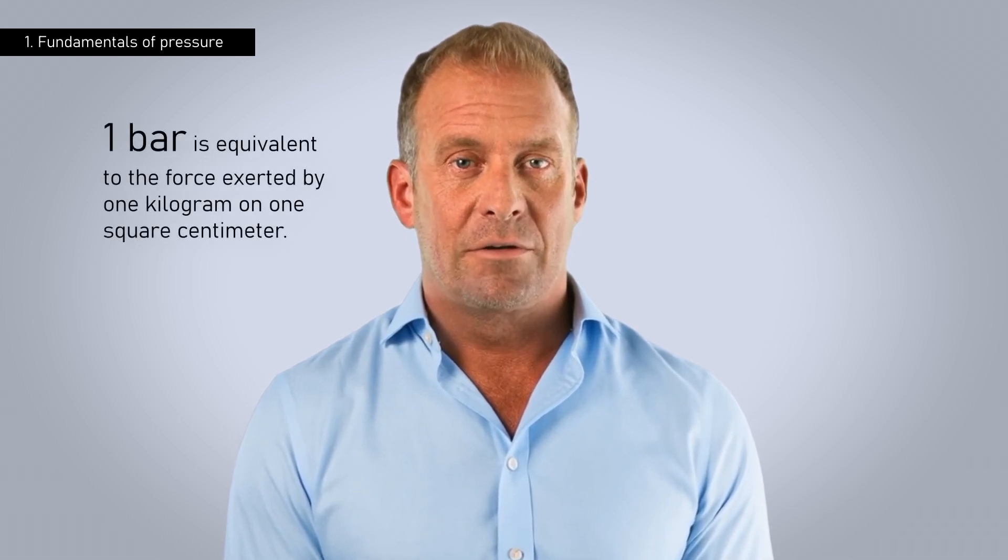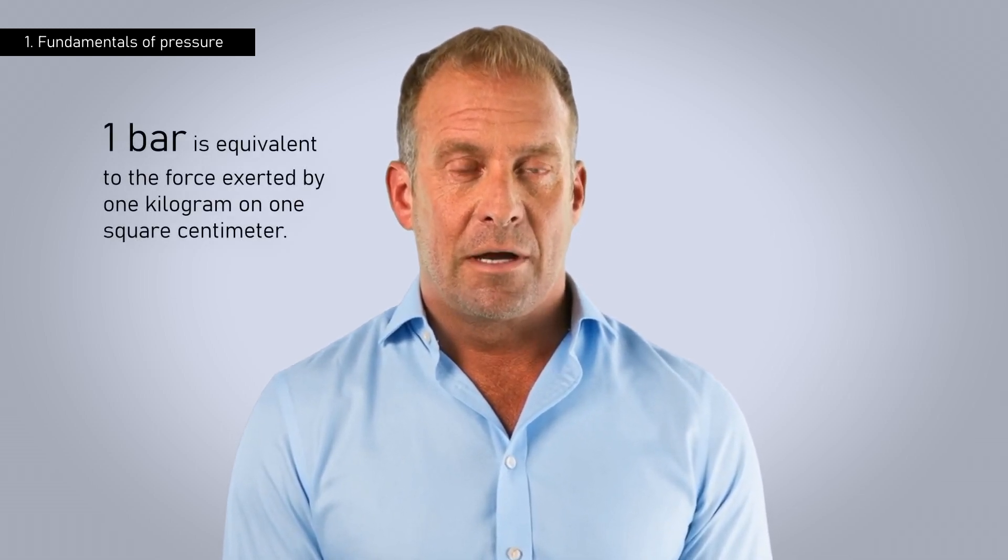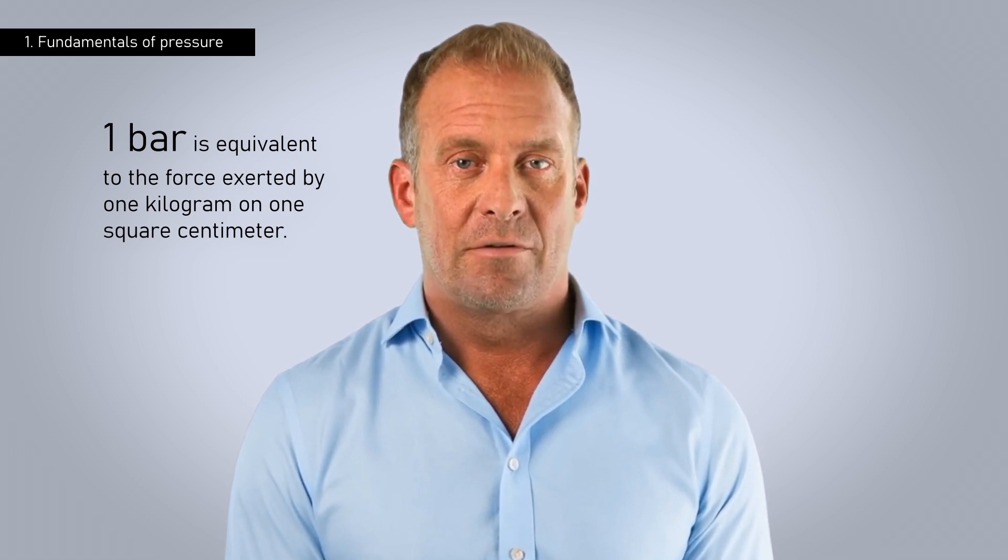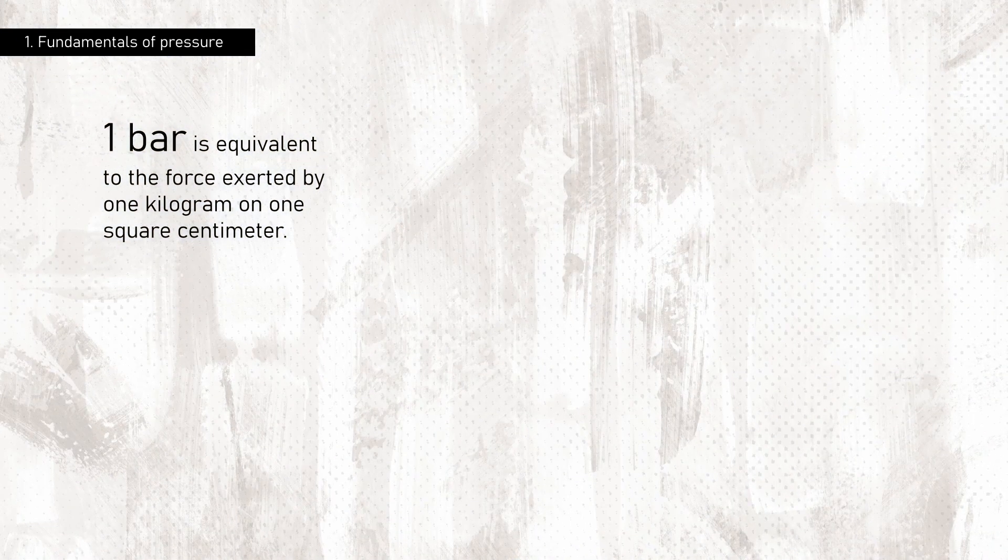Having defined the concept of pressure, it is fundamental to understand the various units used to measure it. The most common is the bar, which is equivalent to the force exerted by one kilogram on one square centimeter. To calculate the total force exerted on a surface under a pressure of one bar, simply multiply the area of that surface by the pressure. Remember the basic formula for area: area, expressed in square centimeters, is equal to base times height.